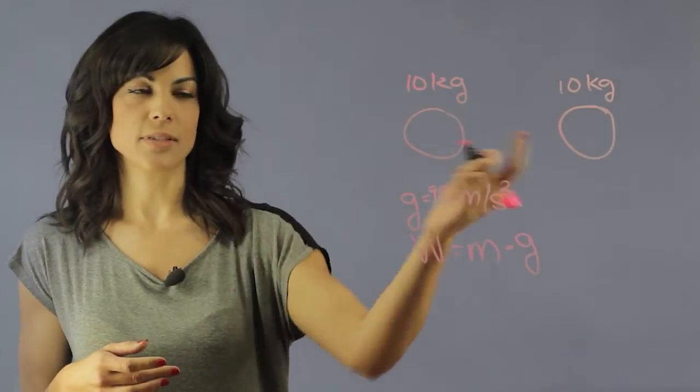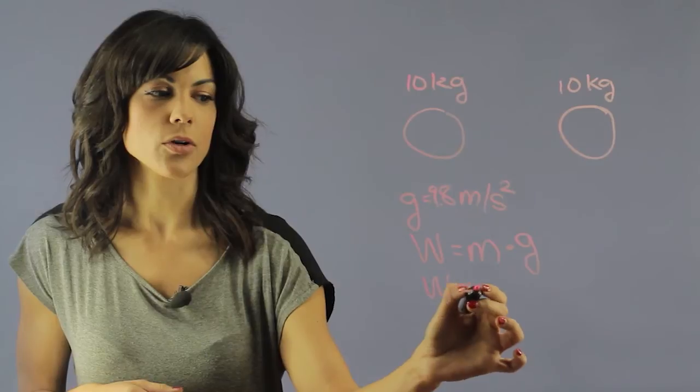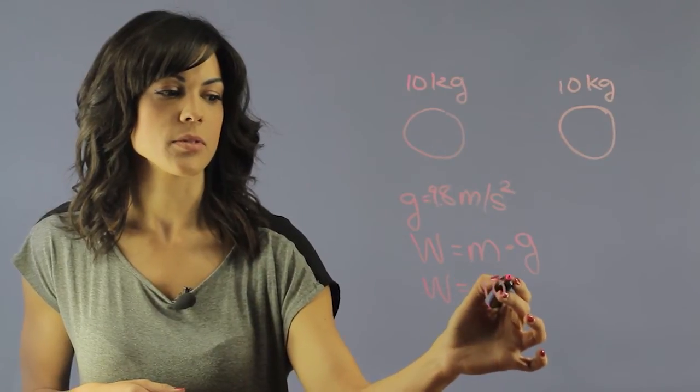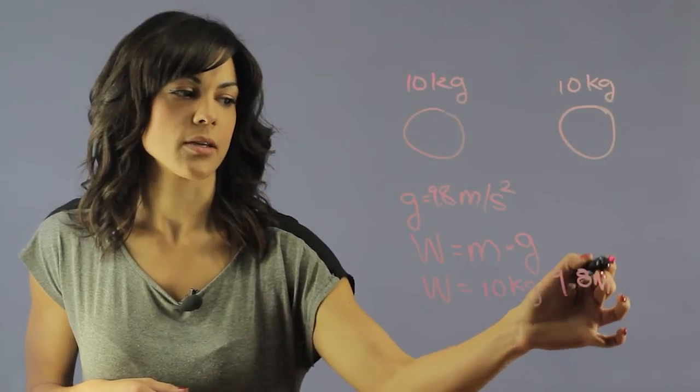So let's say we have the 10 kilogram ball in space, it doesn't matter. But if you have this 10 kilogram ball here on Earth, you will have 10 kilograms times 9.8 meters per second squared.